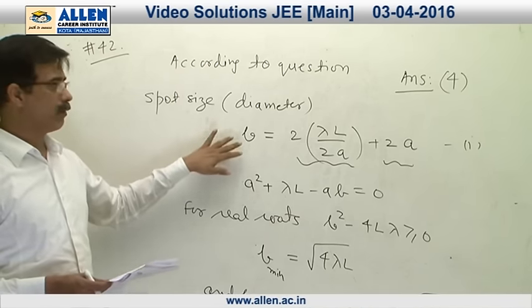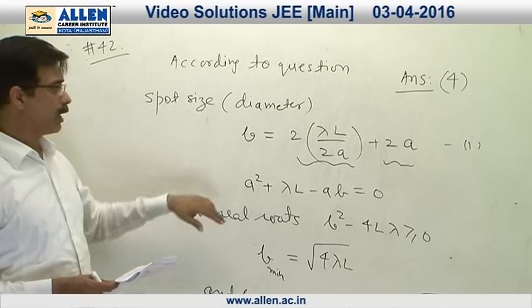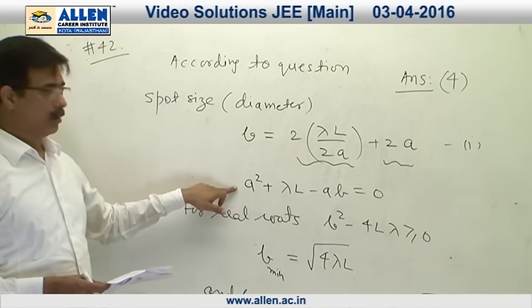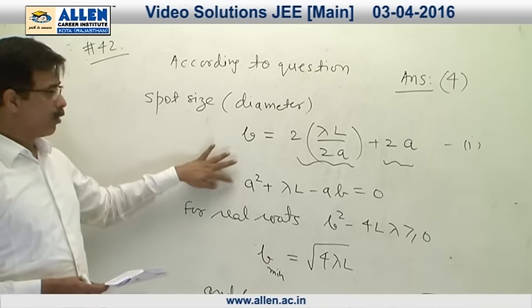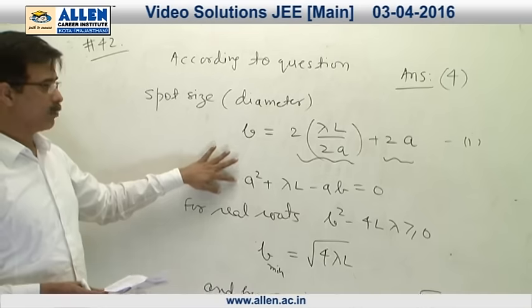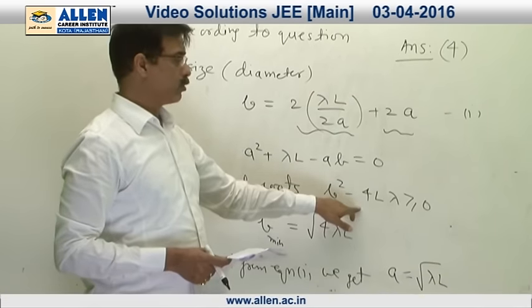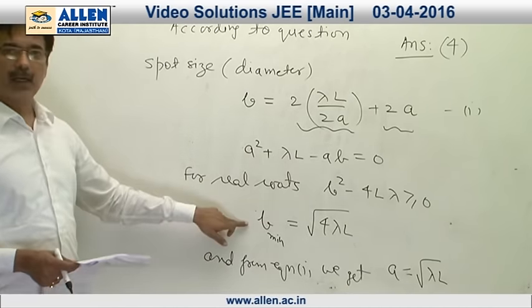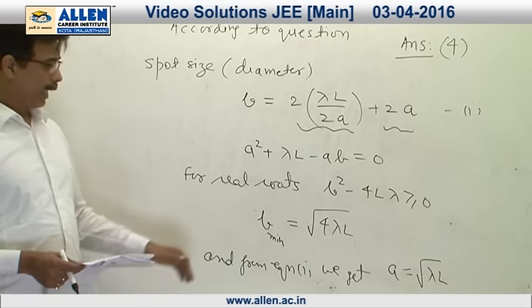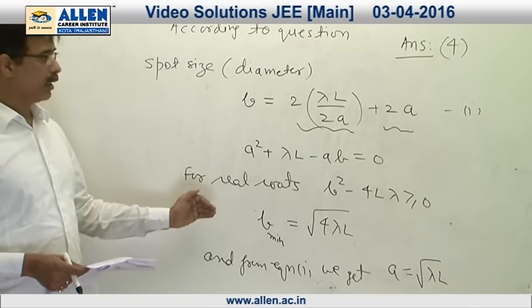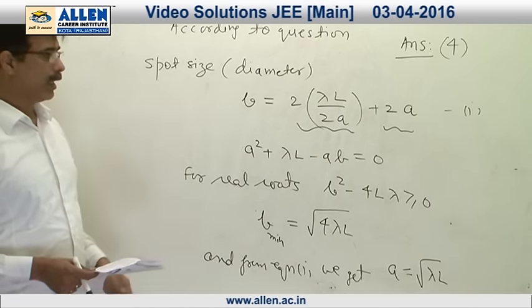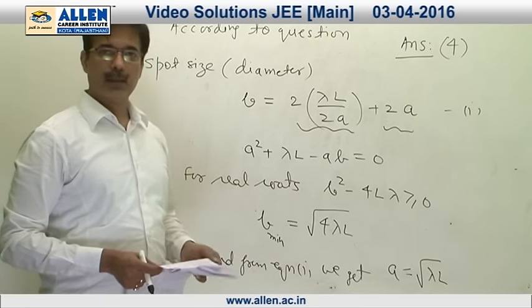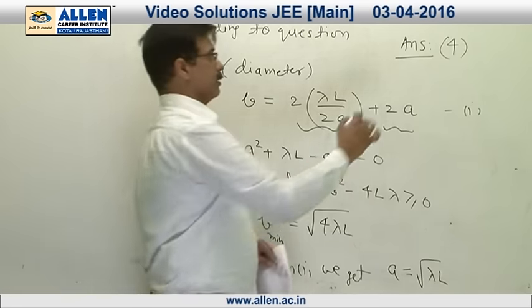We have got this one equation which is quadratic in A. So for its real roots, B squared minus 4 L lambda should be greater than or equal to zero. From here we get minimum value of B. On substituting this minimum value of B in equation one again, we get A equal to root lambda L. Hence our answer is 4.